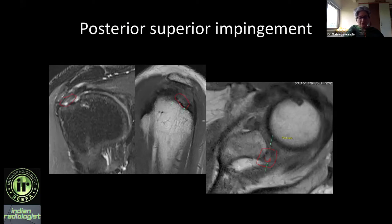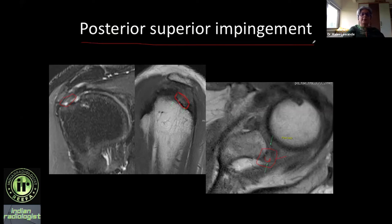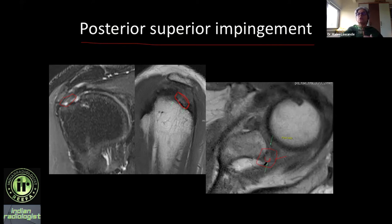The history reveals this is a young 29-year-old who plays cricket — an overhead throwing athlete. In overhead athletes such as cricket players, gym-goers doing bench presses, and badminton or squash players, if you find posterior superior labral tear together with posterior supraspinatus and anterior infraspinatus tendinosis or tears, think of posterior superior impingement. You can note in the report: please correlate clinically for posterior superior impingement — it's not a radiological diagnosis, but based on the constellation of findings you can suggest it.